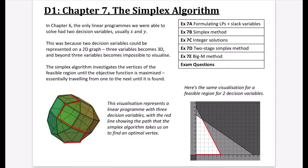For exercise 7a, we're not actually going to do the simplex algorithm. We're going to do a recap about how we formulate linear programs and introduce slack variables. Then we'll properly do the simplex method in exercises 7b and 7c. We learn about the two-stage simplex method in exercise 7d, and the big M method from 7e. Pretty much they're all built on the simplex method itself as variations. I'll finish off the playlist with some exam questions as well.